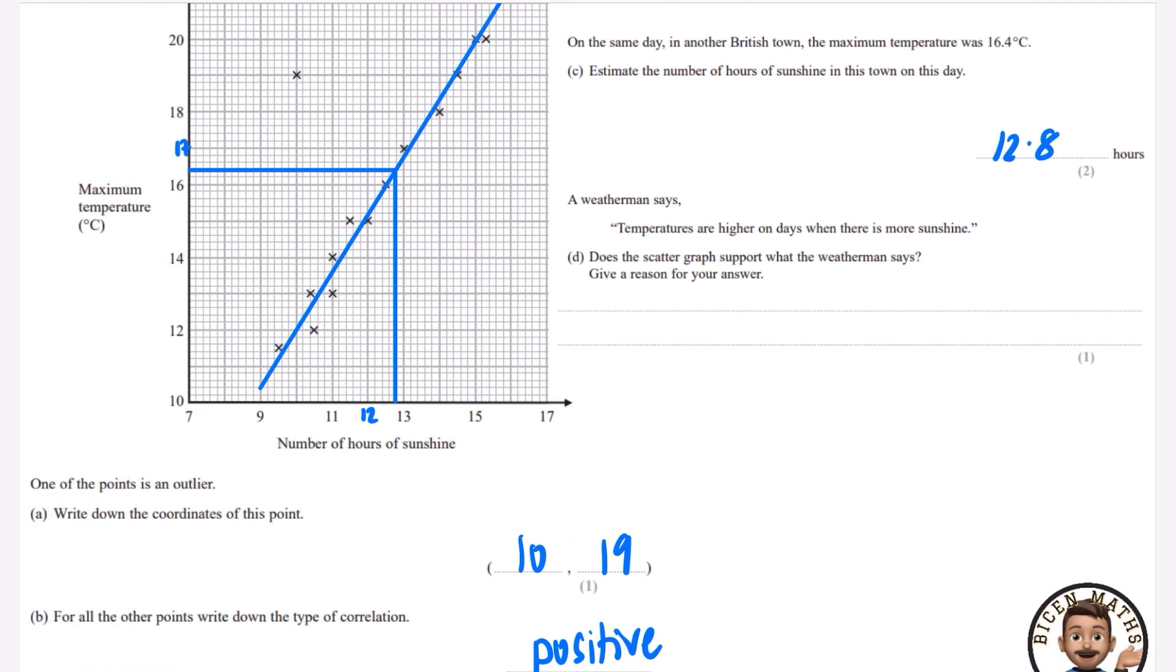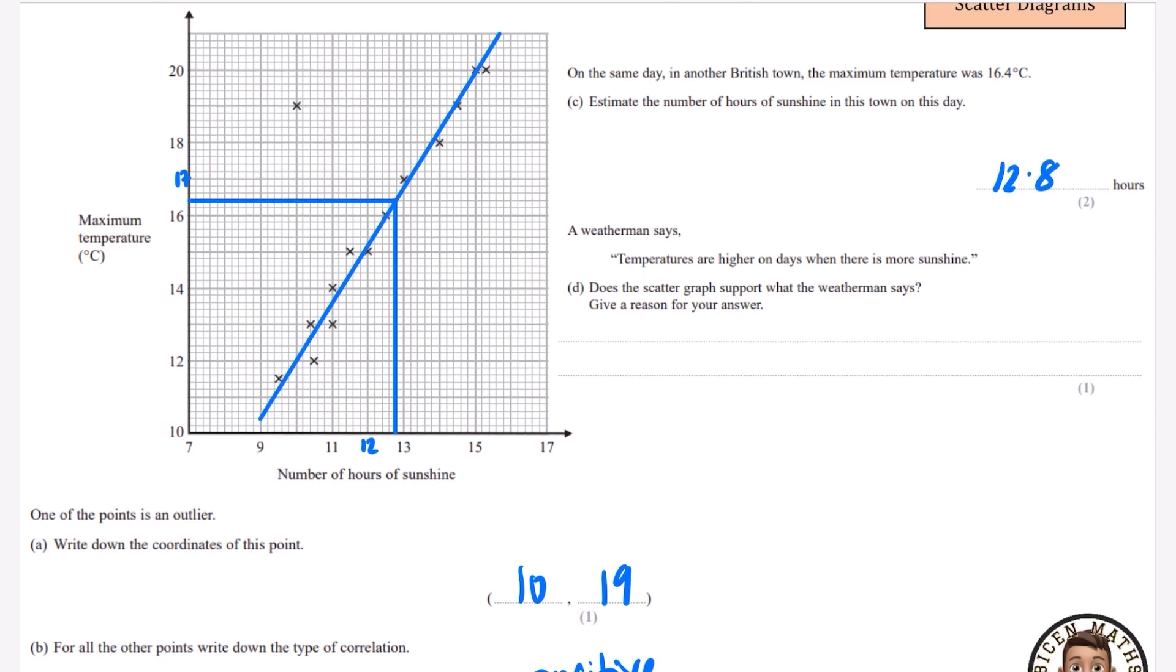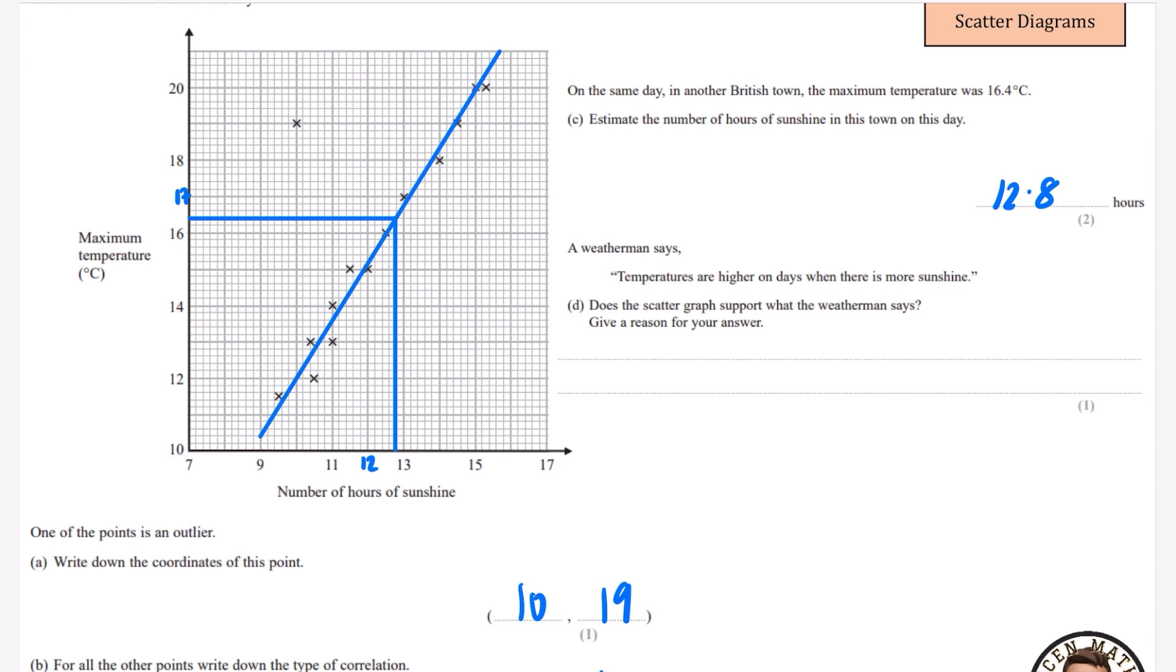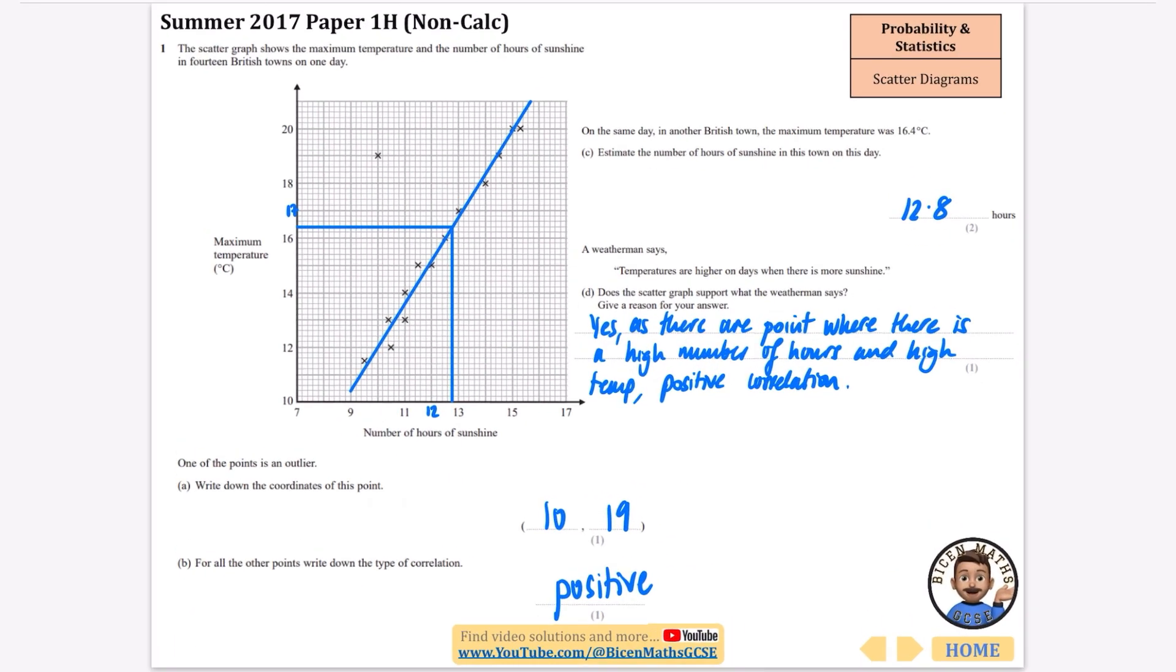A weatherman says temperatures are higher on days when there is more sunshine. Does the scatter graph support what the weatherman says? We can see it on the graph. We're going to say yes, there are points where there is a high number of hours and high temperature. In other words there is positive correlation. They're trying to get us to explain what positive correlation is. It's from the first paper and the first question, so I don't think they necessarily had the best idea of what they were wanting to ask.